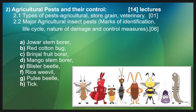In Topic 2.2, we will study different types of agricultural pests such as jowar stem borer, red cotton bur, brinjal fruit borer, mango stem borer, and blister beetle — these are five agricultural pests. We will also study non-insect pests: rice weevil and pulse beetle, which are two stored grain pests, and the tick, which is a veterinary pest.